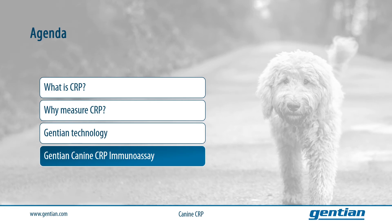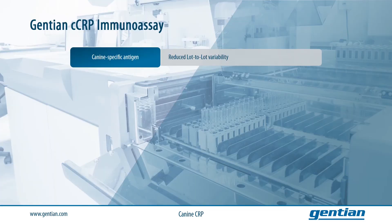In the last part of this webinar we will take a look at the Gentian canine CRP immunoassay and its specifications and advantages. One of the main advantages of the Gentian canine CRP assay is that it is developed with canine-specific antibodies instead of human, resulting in less lot-to-lot variability and high specificity, since canine CRP — in contrast to human CRP — is glucosylated at two subunits.